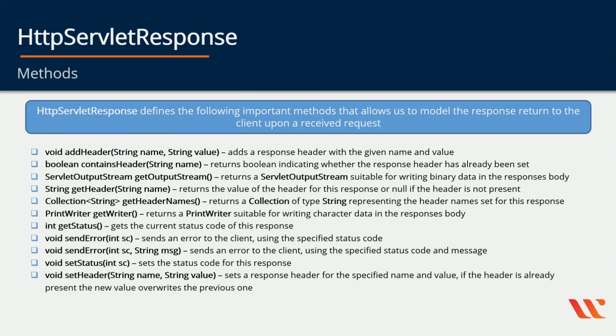setStatus can be used to set the status code for this response. The setHeader method takes two string arguments and sets a response header for the specified name and value — if the header is already present, the new value overwrites the previous one. Just like in HttpServletRequest, there are more methods not shown here, but you can browse through the Javadoc for anything important that may not have been presented.